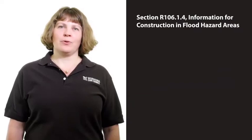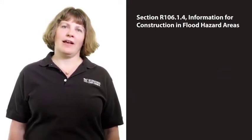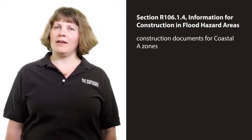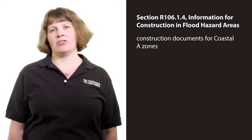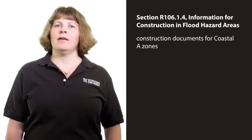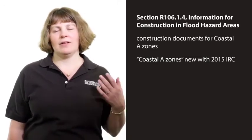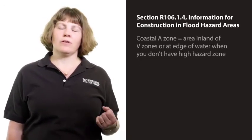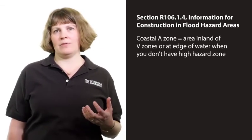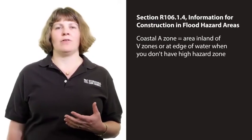Section R106.1.4, information for construction in flood hazard areas, has been modified. Construction documents for dwellings in coastal A zones shall include the elevation of the bottom of the lowest horizontal structural member. The term coastal A zone is also new with the 2015 IRC. A coastal A zone is the area that is inland of V zones, or at the edge of the water when there is no high hazard zone.